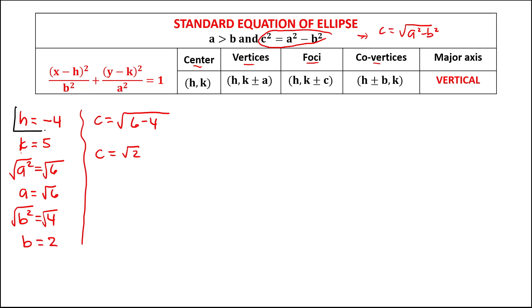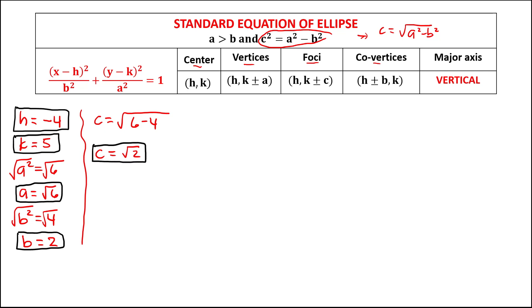Now that we have all five values (h = −4, k = 5, a = √6, b = 2, c = √2), we can find the coordinates. The center of the ellipse is (h, k) = (−4, 5).